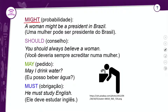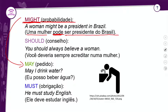Agora vamos falar sobre o 'might'. Ele exprime a ideia de probabilidade. O 'might' é bem similar ao 'may', no sentido de expressar a possibilidade de algo ser realizado. Porém, ele expressa uma possibilidade menos provável que o 'may'. Exemplo: 'A woman might be president of Brazil' — uma mulher pode ser presidente do Brasil. O 'might be' expressa probabilidade, não certeza.